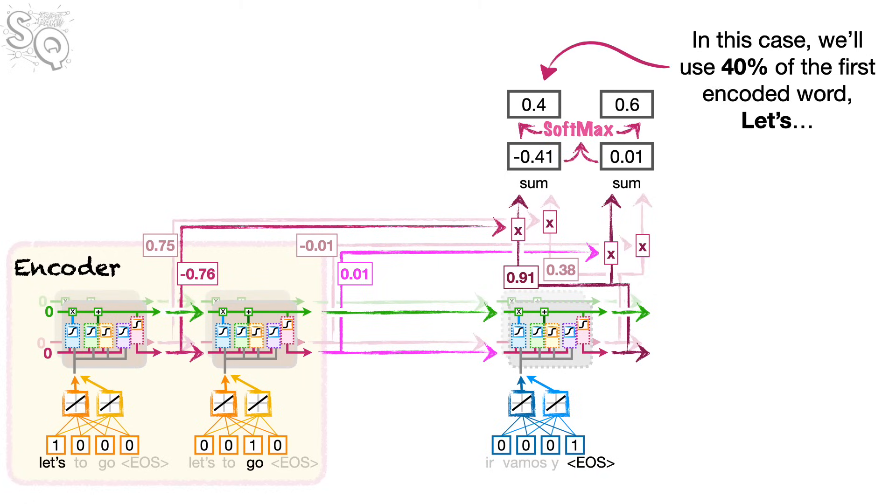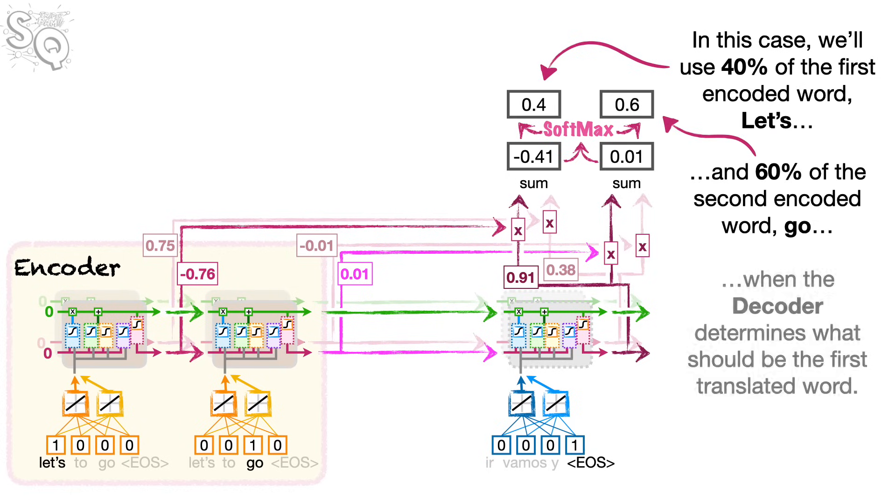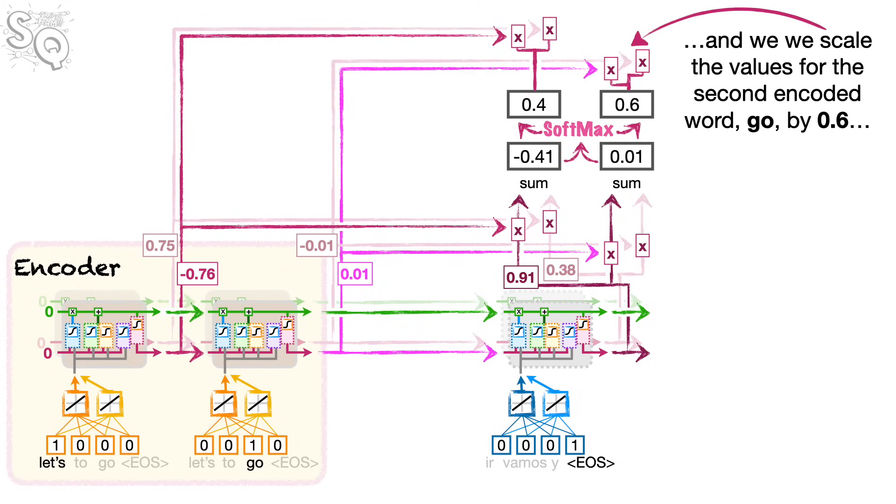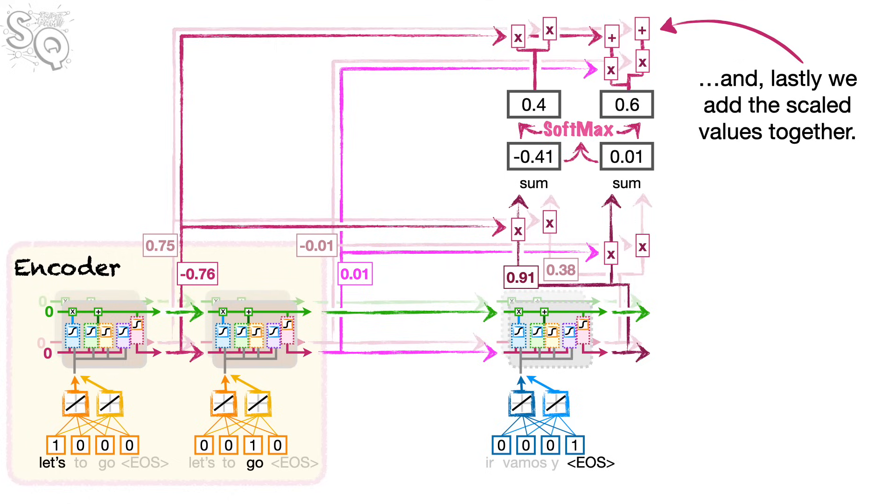Remember, the softmax function gives us numbers between 0 and 1 that add up to 1. So we can think of the output of the softmax function as a way to determine what percentage of each encoded input word we should use when decoding. In this case, we'll use 40% of the first encoded word, LETS, and 60% of the second encoded word, GO, when the decoder determines what should be the first translated word. So we scale the values for the first encoded word, LETS, by 0.4. And we scale the values for the second encoded word, GO, by 0.6.